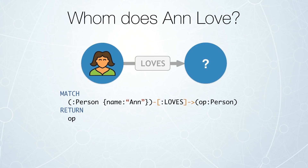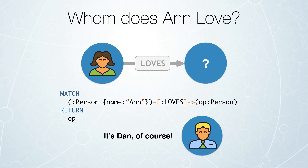Now let's say we wanted to run a basic query: we know Anne loves someone — who does Anne love? That query is quite simple. We just say find me a person named Anne who loves another person. You can see how we're using the alias called OP to return that other person back as a result of the query. In this case we're returning the node and we get Dan, of course. So Anne loves Dan.